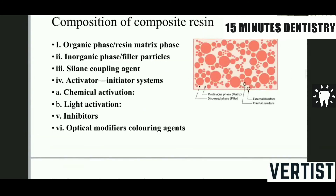If you want to see the main content of composite resin — why it is known as composite resin and what are its different components — it contains an organic phase, that is the resin matrix, as the base or main phase of the composite. It contains inorganic particles, that is filler particles, which play a major role in the longevity of the restoration. Then we have a silane coupling agent, an activator, chemical activation, light activation, inhibitors, and optical modifiers. These are the different components of the composite resin and the most commonly asked question is the role of each and every ingredient.